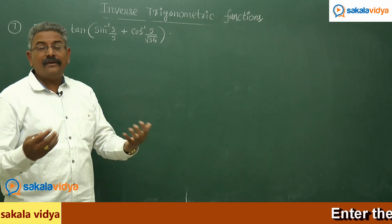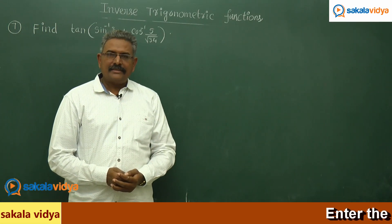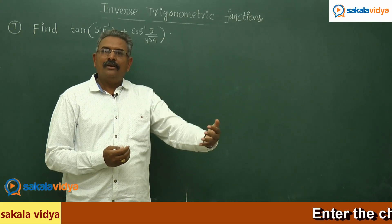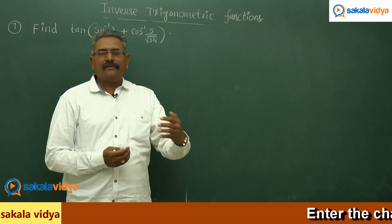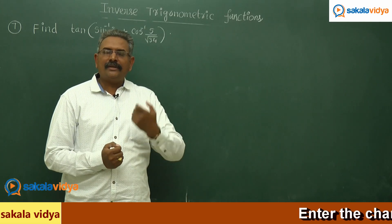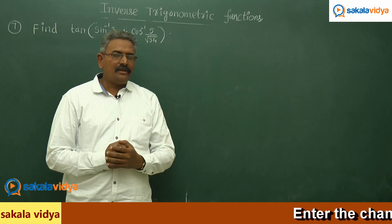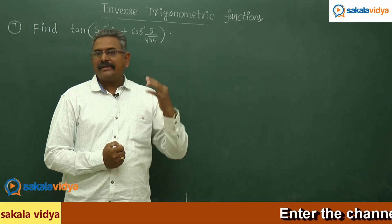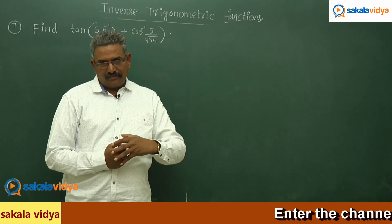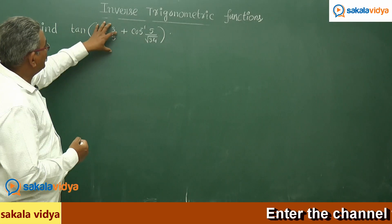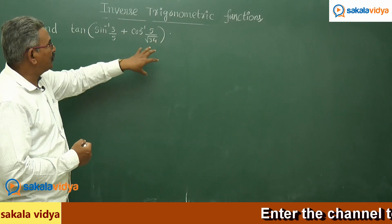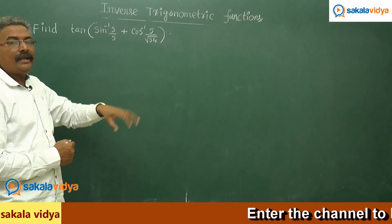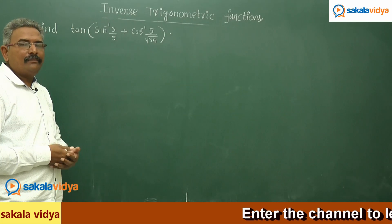What is the value of tan of alpha plus beta? Tan of alpha plus beta equals tan alpha plus tan beta upon 1 minus tan alpha tan beta. In order to find out tan of alpha plus beta, we need two values: tan alpha and tan beta. With the help of sin inverse 3 by 5 and cos inverse 5 by root 34, we need to find out tan alpha and tan beta so that tan of alpha plus beta can be evaluated.